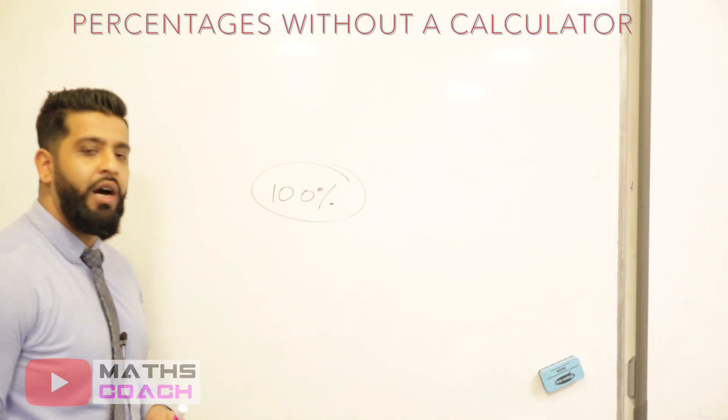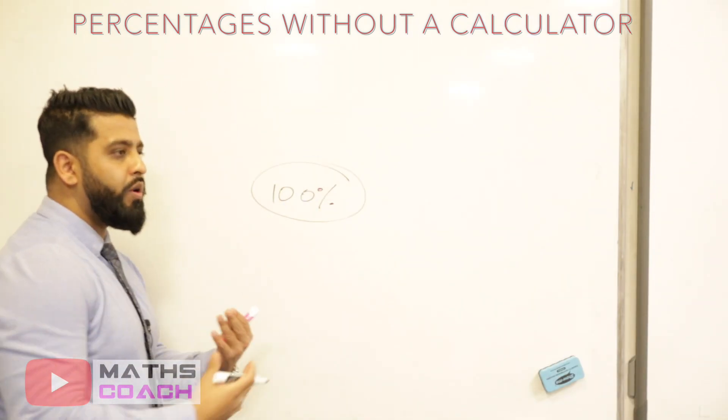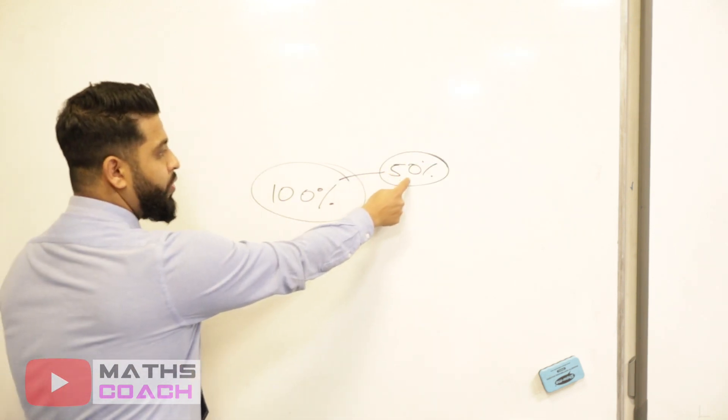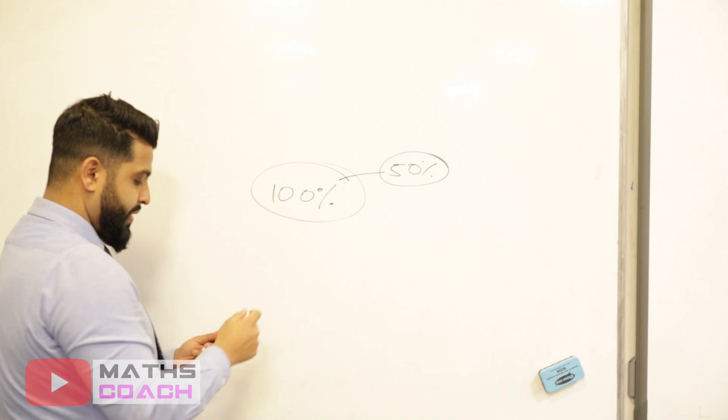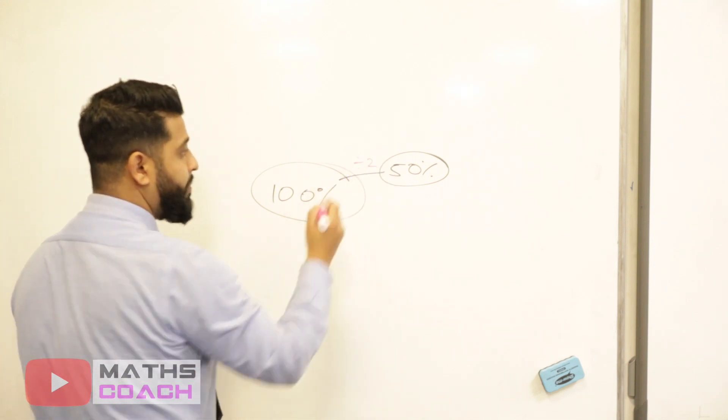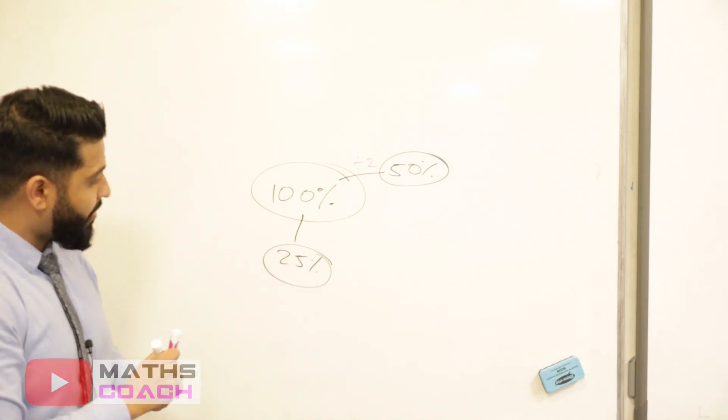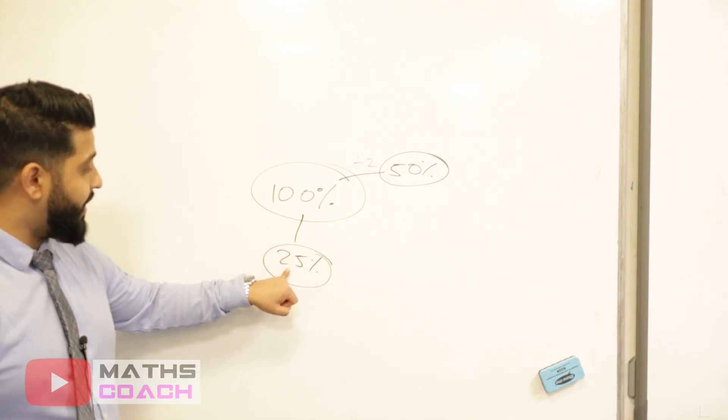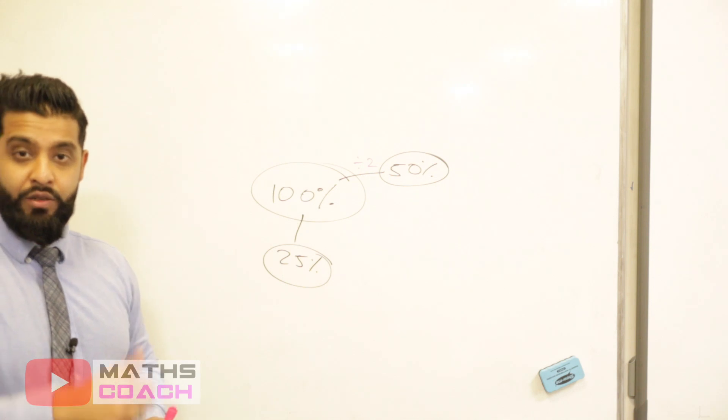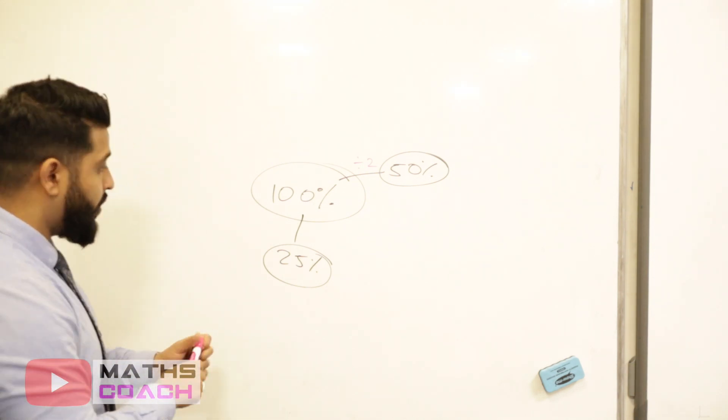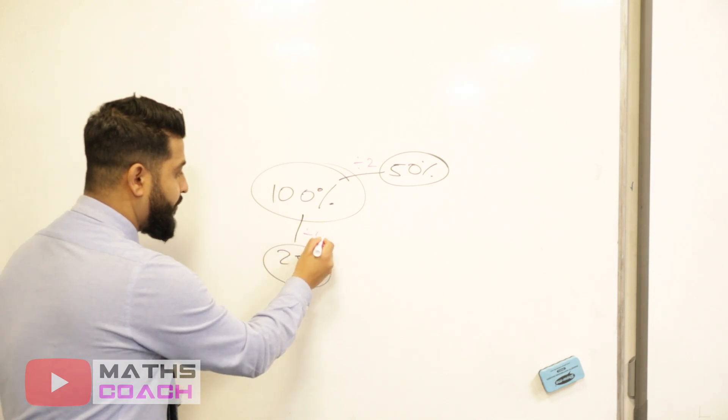All percentages are out of 100%. If we want to work out, for example, 50%, we know that there are two lots of 50s in 100%. So we divide the original amount by two. And if we want to work out 25%, we know that there are four lots of 25% in 100%. So we divide by four.